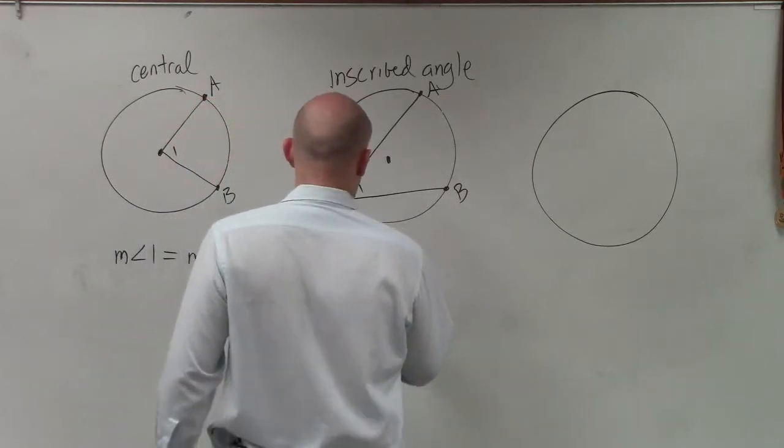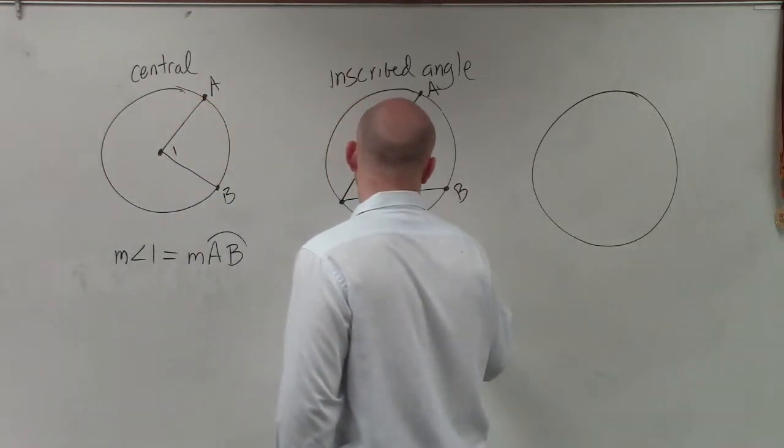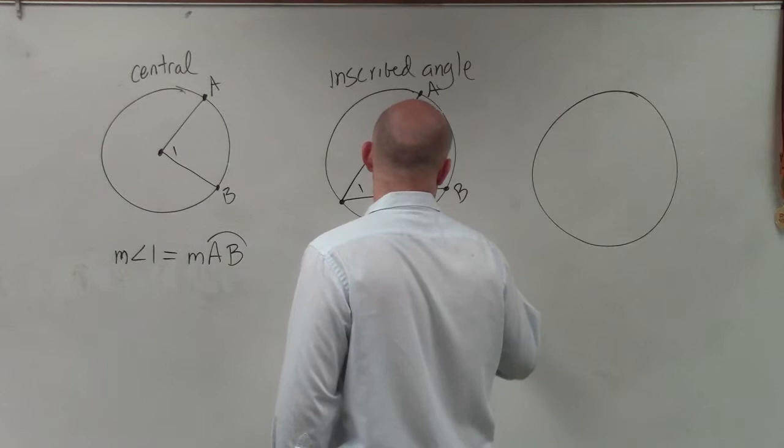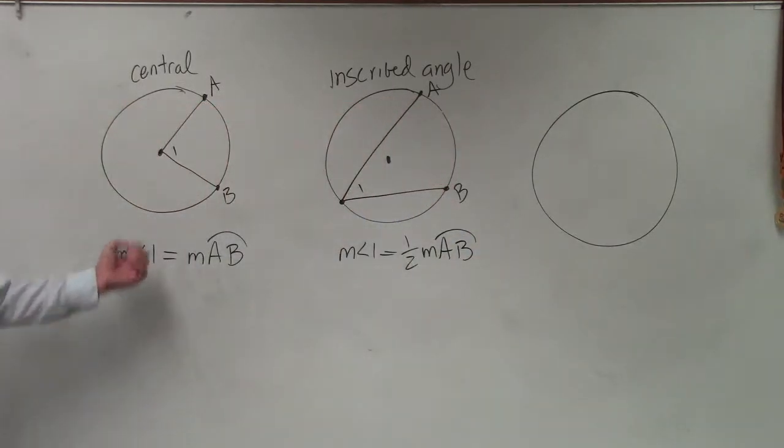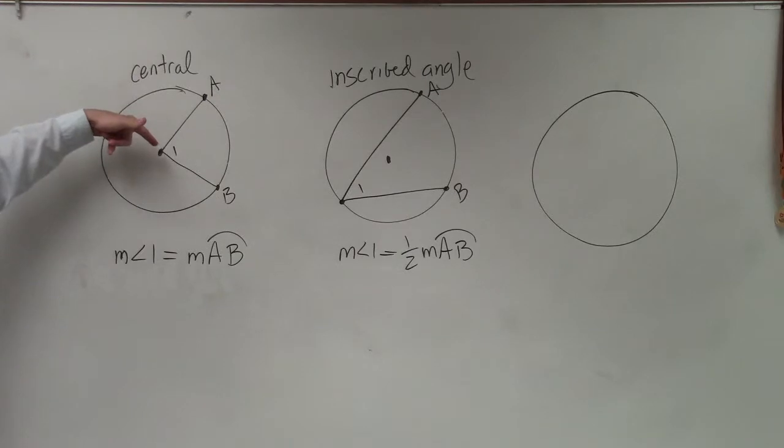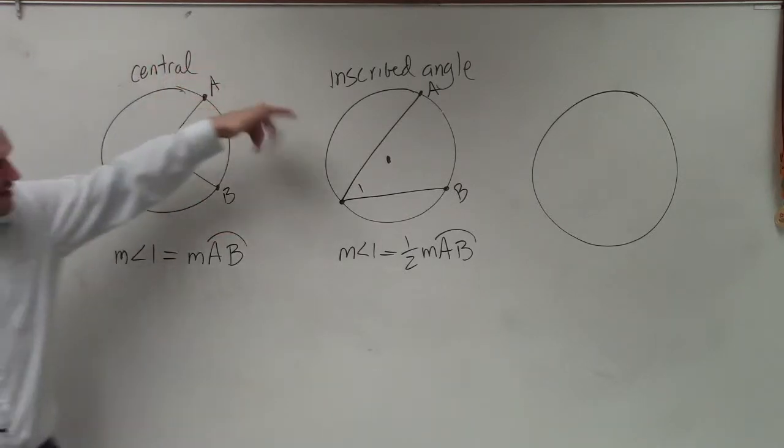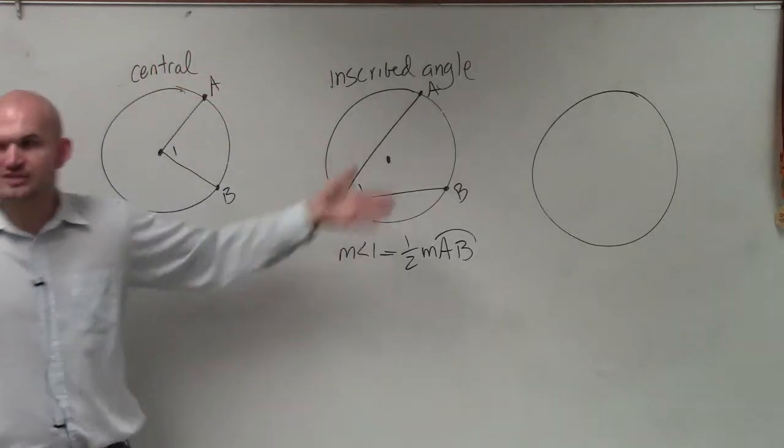So the measure of angle 1 is equal to 1 half the measure of arc A B. So it depends on where your vertex is at. If your vertex is in the center, then the arc is the same. If your vertex is on the circle, then it's 1 half of the arc.